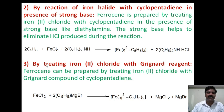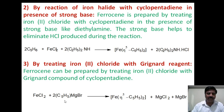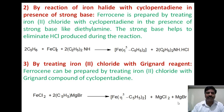The third method is by treating ferrous chloride with a Grignard reagent. When ferrous chloride reacts with cyclopentadienyl magnesium bromide — the Grignard reagent — it forms ferrocene with liberation of magnesium chloride and magnesium bromide. These are the three methods for preparation of ferrocene; only one method is sufficient for examination purposes.